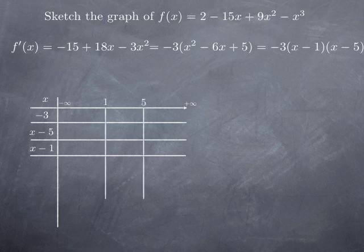So negative 3, of course, is going to be negative for all x and the other two factors are going to change sign at 1 and 5 respectively. So as I said, negative 3 is always negative. x minus 5 is 0 at 5. It is positive if x is greater than 5 and negative otherwise. x minus 1 is 0 at 1. Positive if x is greater than 1, negative otherwise.